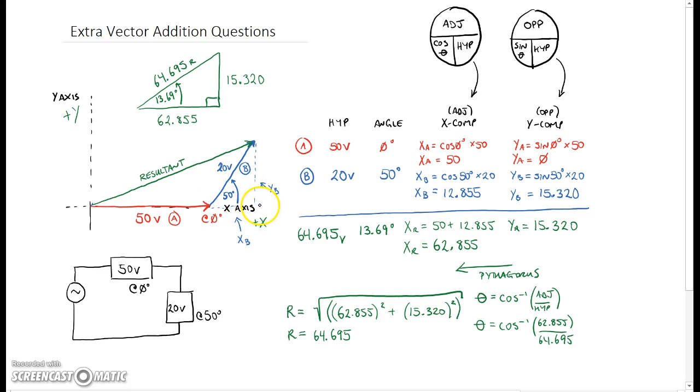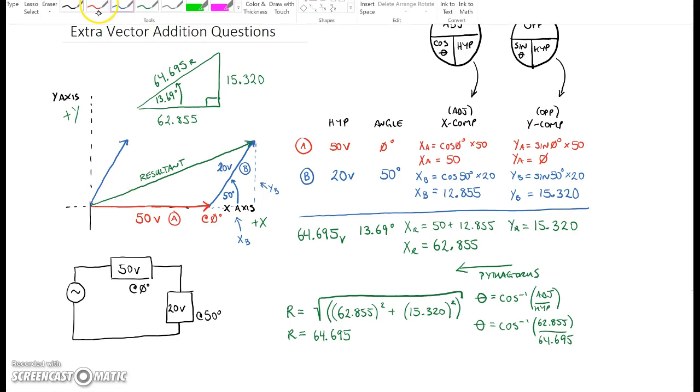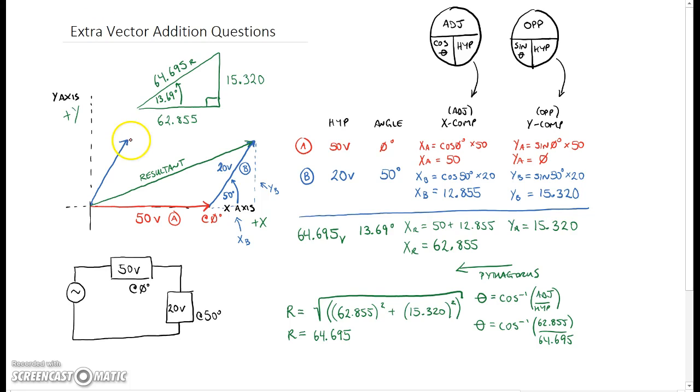That angle is always in reference to the x-axis. Now this could have been drawn like this where we have this vector right here. All right, so these two are you know tried to be drawn the exact same here. That angle of 50 degrees is right here and so you can see that it doesn't matter whether we started with the red vector and then the blue vector or whether we did the blue vector and then the red vector, we always end up at the exact same spot.